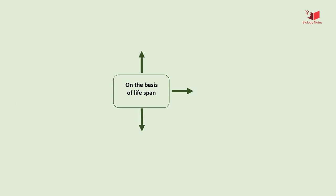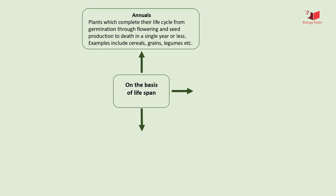Classification of flowering plants on the basis of lifespan is divided into three parts: annual, biennial, and perennial. An annual plant is a plant that completes its life cycle, from germination to the production of seeds, within one growing season, and then dies. Examples of annual herb plants are mustard, pea, rice, basil, etc.